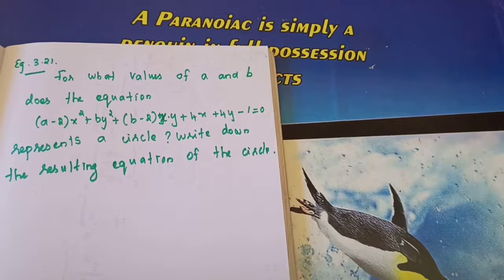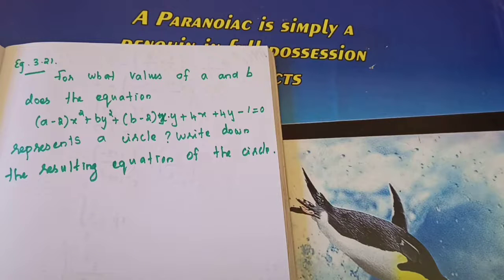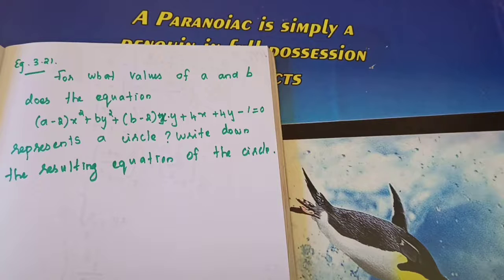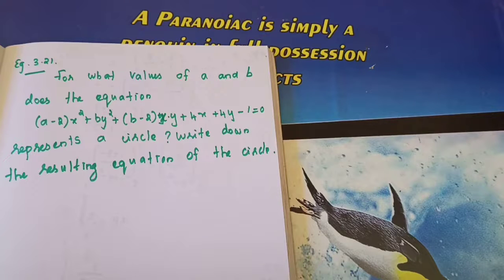For what values of A and B does the equation represent a circle? Write down the resulting equation of the circle. We are going to use the note: coefficient of xy equals 0, so the B minus 2 term equals 0, from which you find B. Then coefficient of x square equals coefficient of y square — from that you find A.